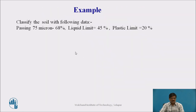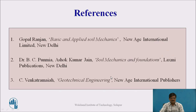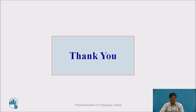Let us take one example. Classify the soil with the following data: passing 75-micron sieve is 68%, liquid limit is 45%, plastic limit is 20%. Since more than 50% passes the 75-micron sieve, it is a fine-grained soil, so we refer to the A-line chart. The plasticity index is 45 minus 20 = 25. Plotting this point, it falls in the zone of CI — clay with intermediate compressibility. These are the references used for the presentation. Thank you.